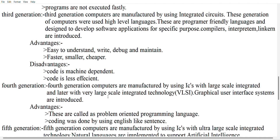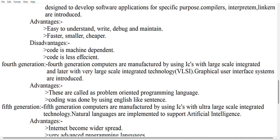In the fourth generation, computers are manufactured using ICs — integrated circuits — with large scale integration and later with very large scale integrated technology. Graphical user interface systems were introduced in this generation. High speed computer networks like LAN, MAN, and WAN started growing. These are called problem-oriented programming languages, and coding was done using English-like sentences.